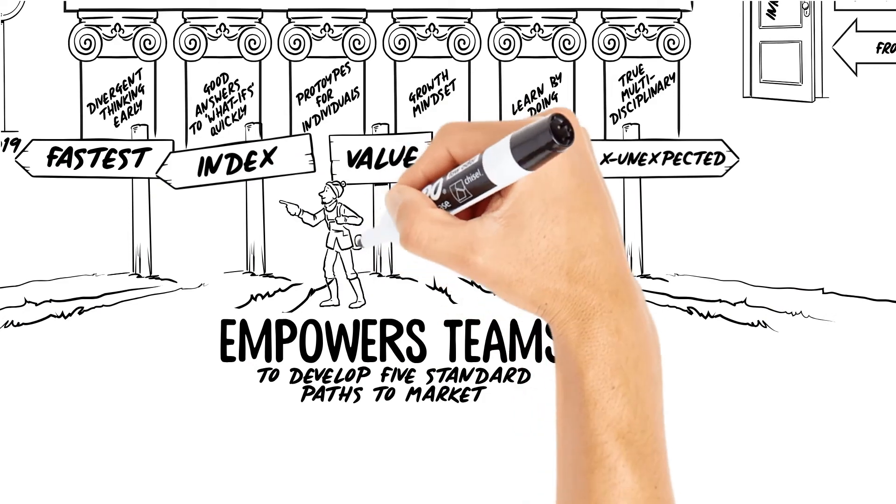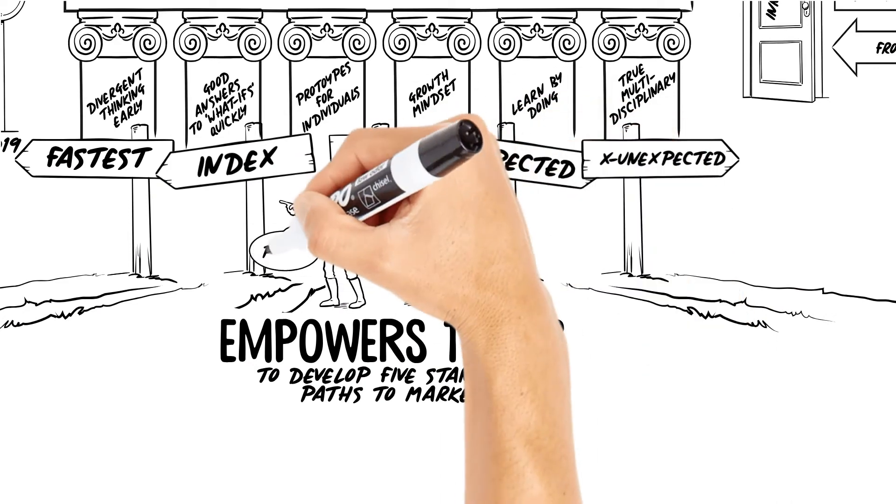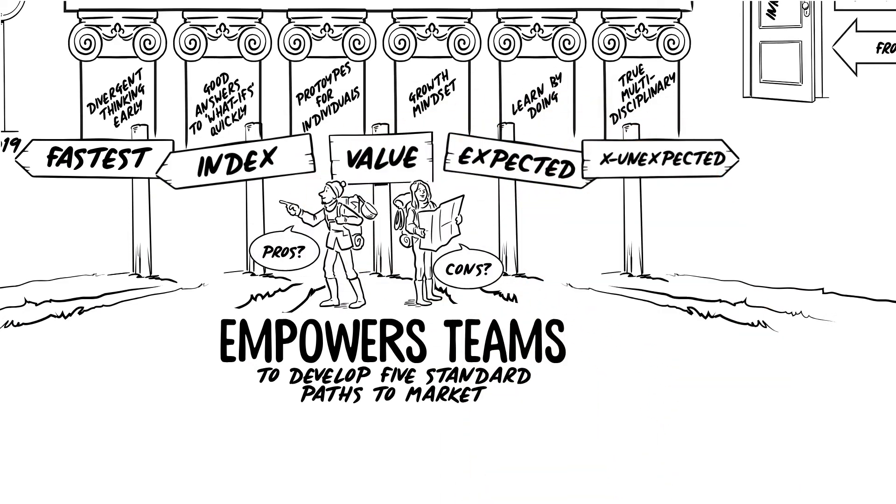In exploring these paths, the team will establish pros and cons that will be critical for a final decision. The final path of course may be a hybrid of these paths or a different path entirely.